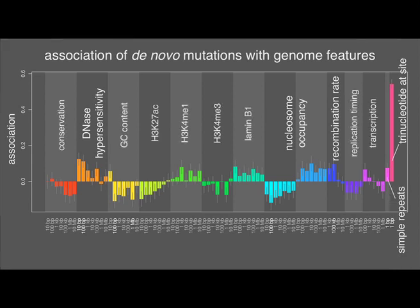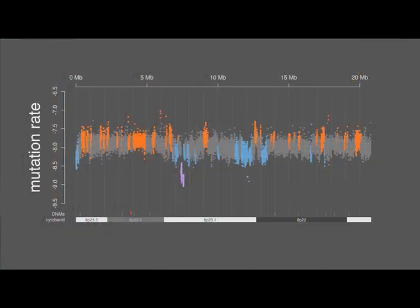We were able to build a model that could accurately predict the mutation rate of any position in the genome based on the combination of these features at that site. This model was able to explain 90% of the variation in mutation rate, and our findings indicate that the mutation rate of individual positions in the genome varies by over 100-fold. Averaging mutation rate within one kilobase windows resulted in a map that revealed the genome-wide landscape of mutability.